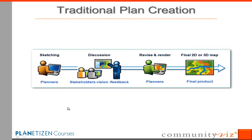In that context, a plan is a kind of design, and the traditional planning process is a linear design process. It starts with usually an idea — what I would call a sketch — something general whose details haven't been worked out yet, and that you expect to change. That sketch gets circulated for comments; other planners, stakeholders, the public provide feedback and ideas for improvement, and eventually that turns into a more final plan.